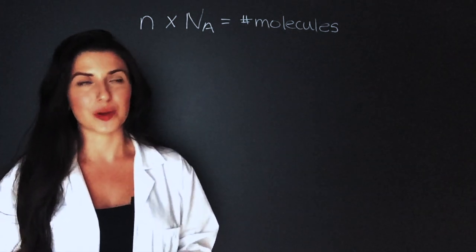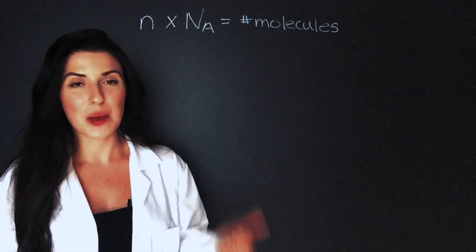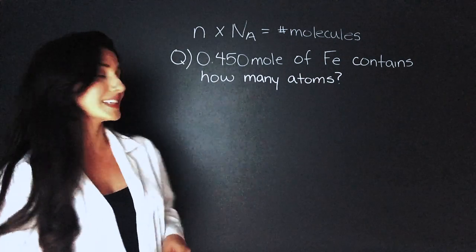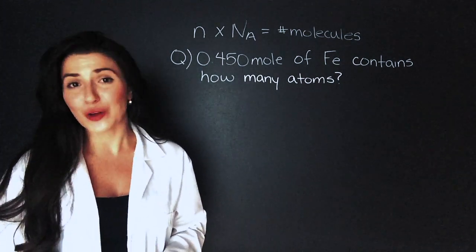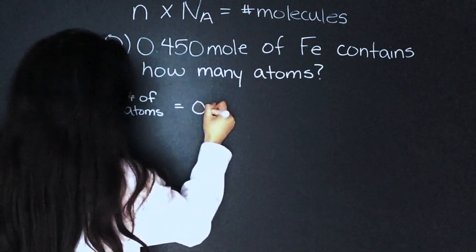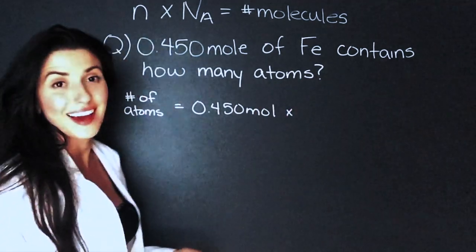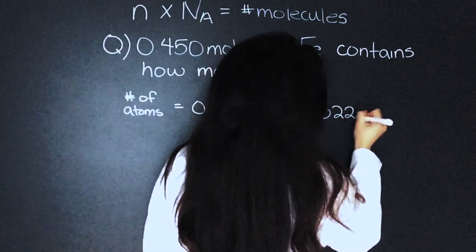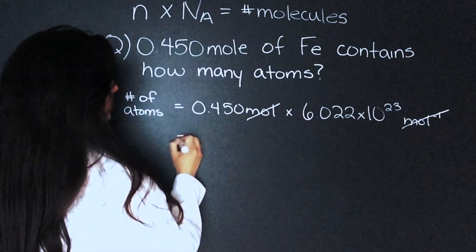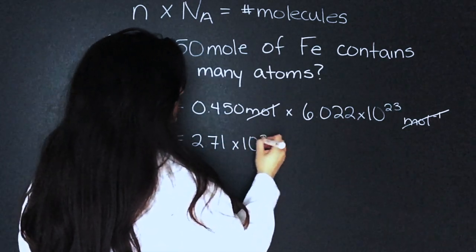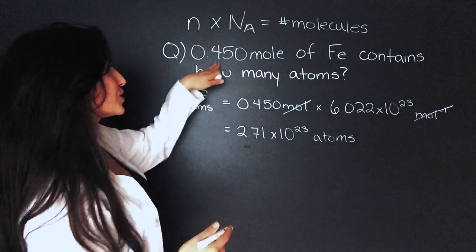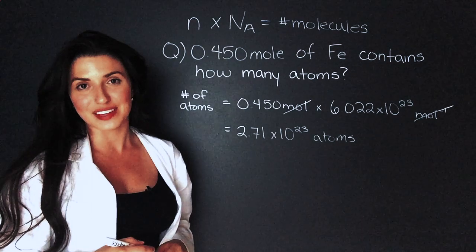The equation goes like this: moles times Avogadro's number equals the number of molecules, atoms, or ions. Any time you get a question where they give you atoms, molecules, or ions, you need this equation because you can't do chemistry without finding the moles. Our first example asks: 0.450 moles of iron contains how many atoms? Number of atoms equals moles times Avogadro's number: 0.450 times 6.022×10²³ mol⁻¹, which gives us 2.71×10²³ atoms. You'll notice three significant figures because there are three significant figures in the question.